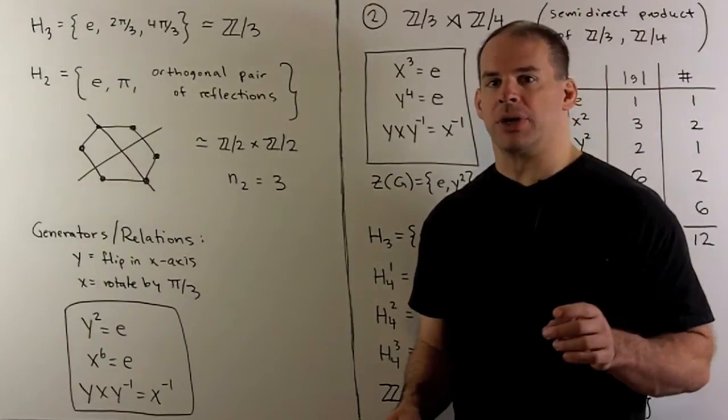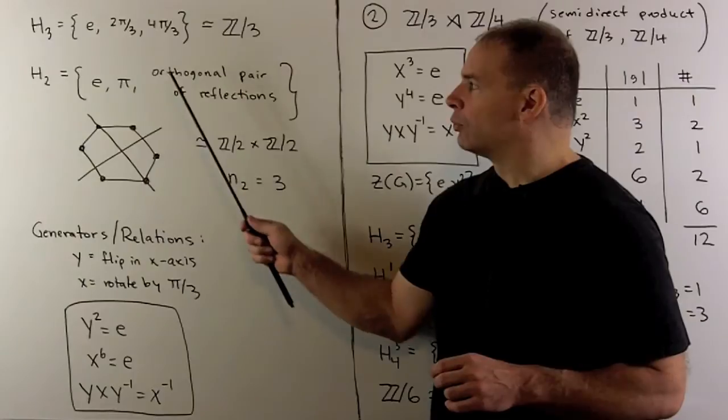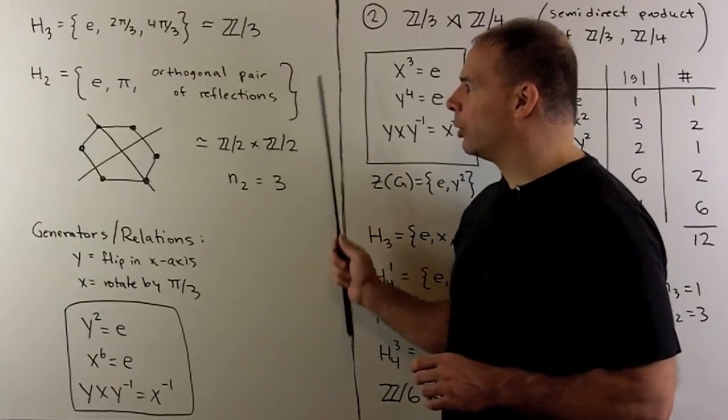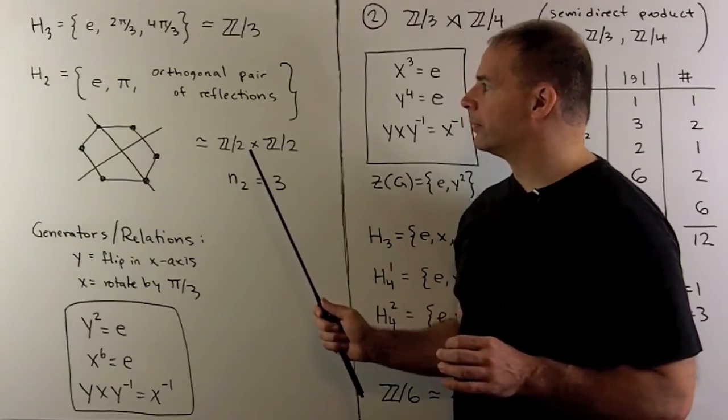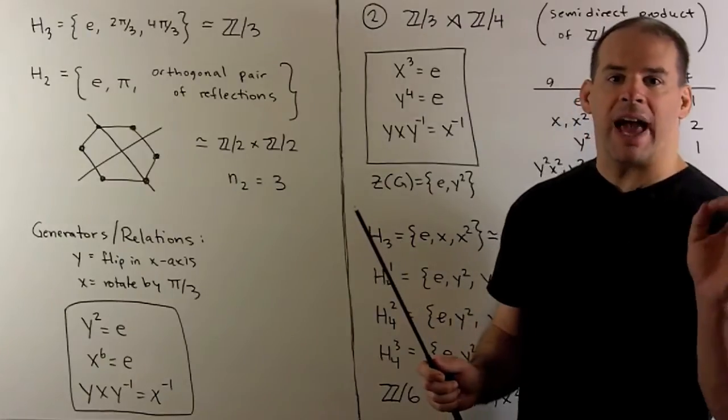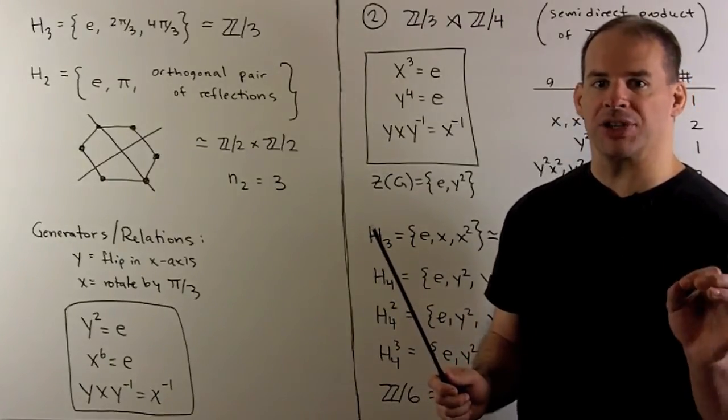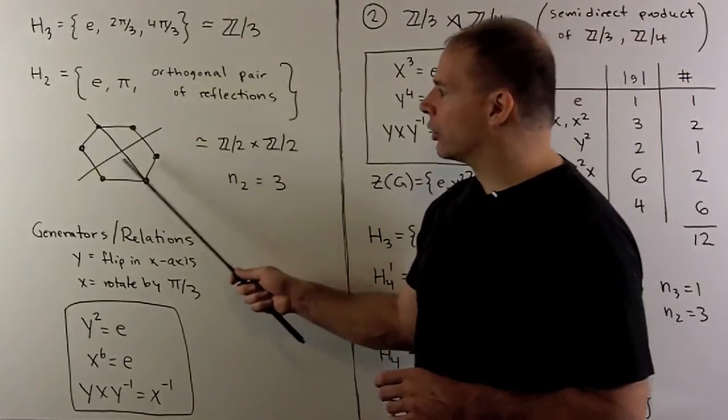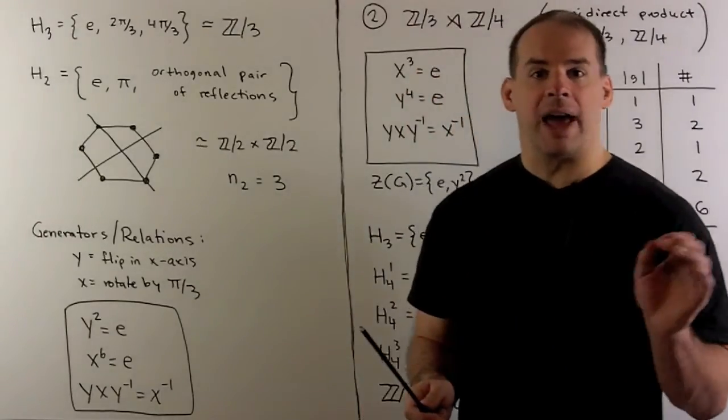To form a Sylow 2 subgroup, take the identity, rotation by pi, and any orthogonal pair of reflections. Now, if I have an axis of reflection for the regular hexagon, perpendicular direction will also be an axis of reflection.